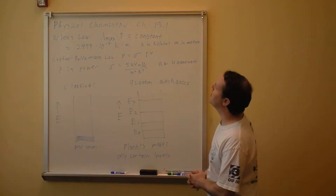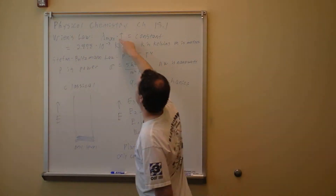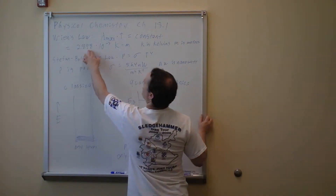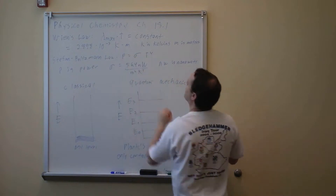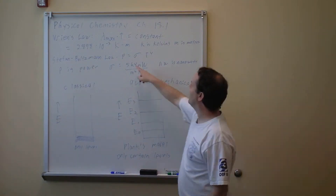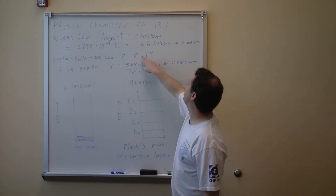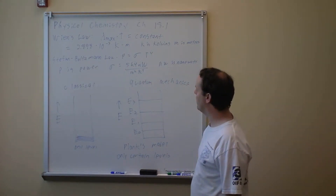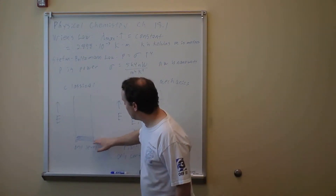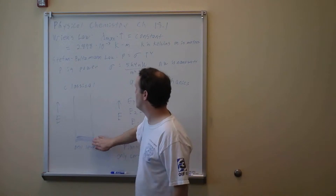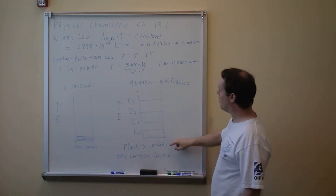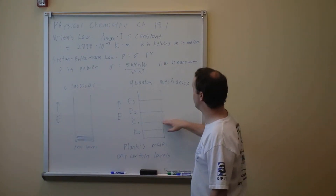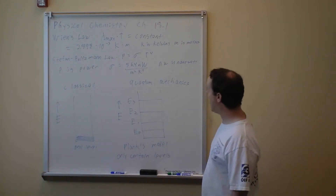Continuing on Physical Chemistry, Chapter 18, Section 1. Wien's Law states that the maximum wavelength times any temperature equals a constant: 2.898 × 10⁻³ K·m. The Stefan-Boltzmann Law gives power equal to σT⁴, where σ = 56.4 nW/m²/K⁴. In the classical picture, energy can be any level — it's continuous. But quantum mechanics — specifically Planck's model for the black body radiation formula — says there are only certain discrete energy levels: level 0, level 1, level 2, with real gaps in between them.